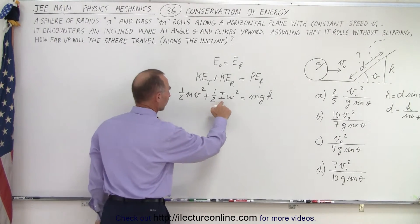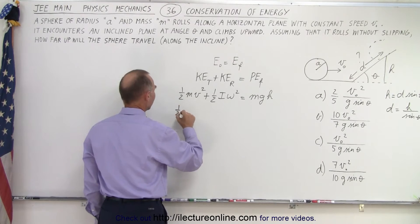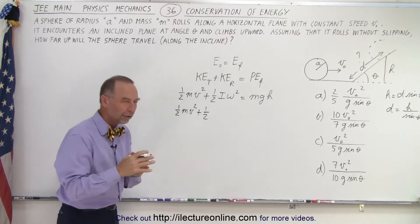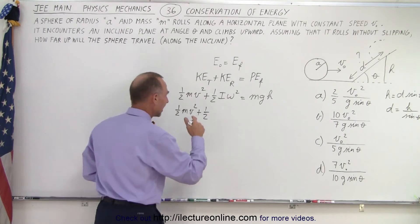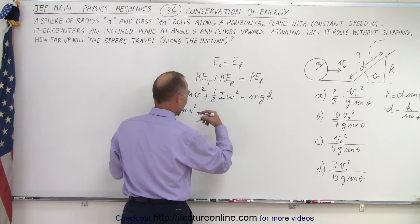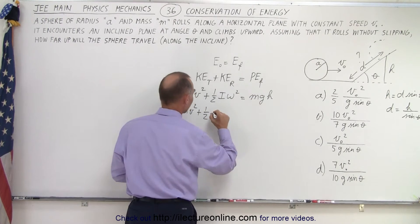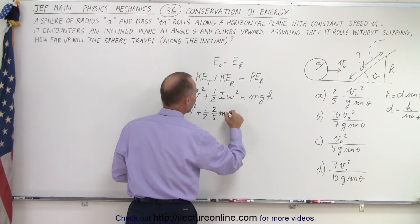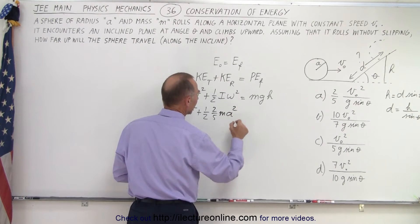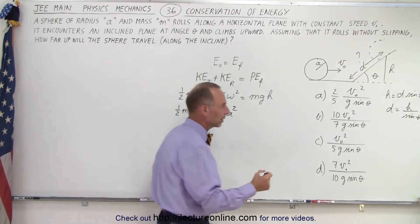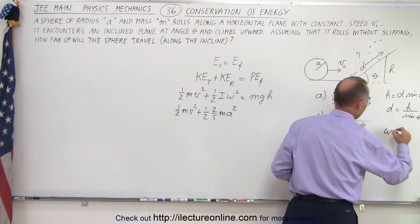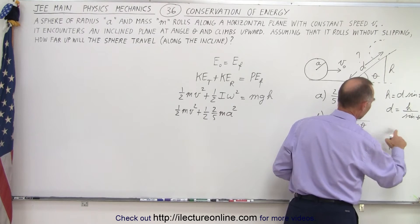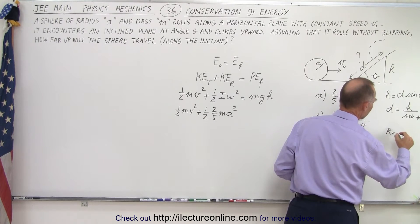So next, what we need to do is find the moment of inertia. So we have 1/2 mv squared plus 1/2, the moment of inertia of a solid sphere is 2/5 mr squared, or ma squared, because the radius here is a. So we have 2/5 times the mass times the radius squared, and times omega squared.